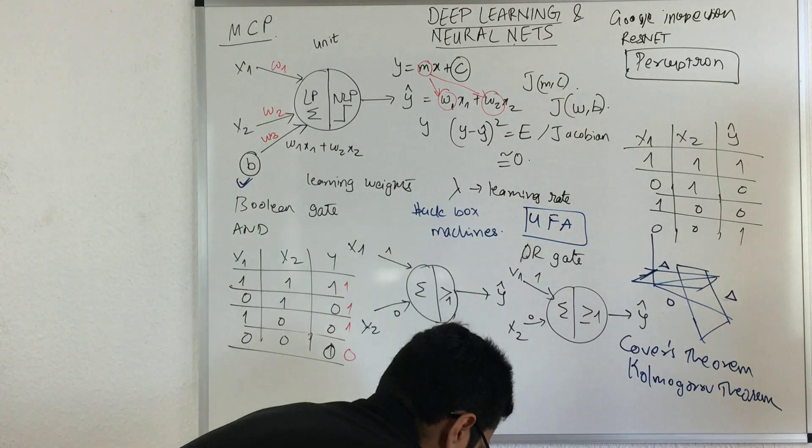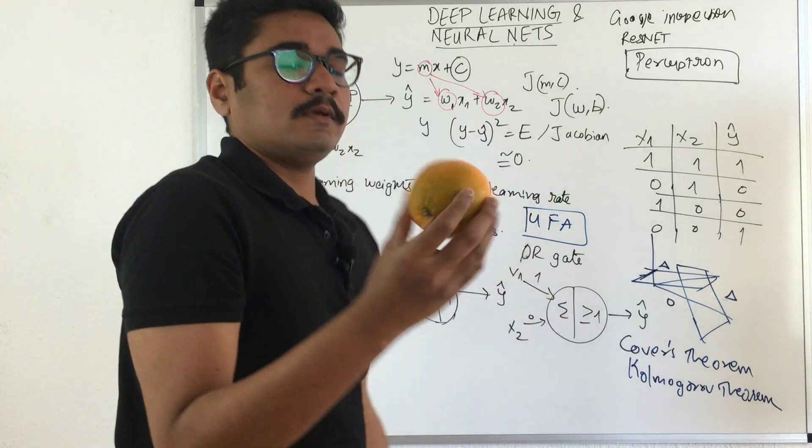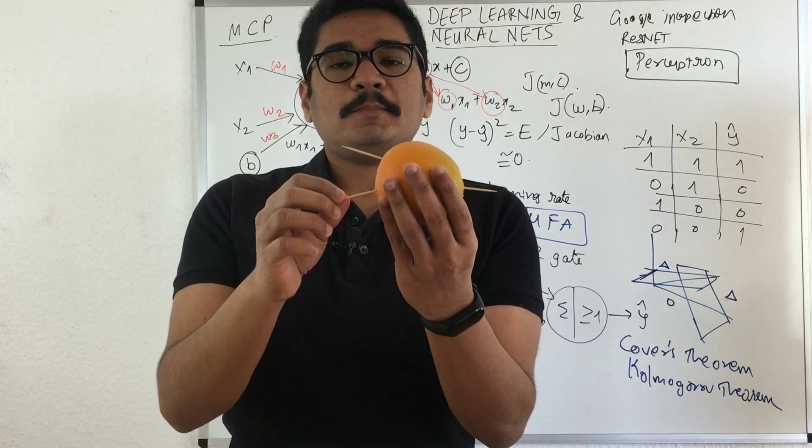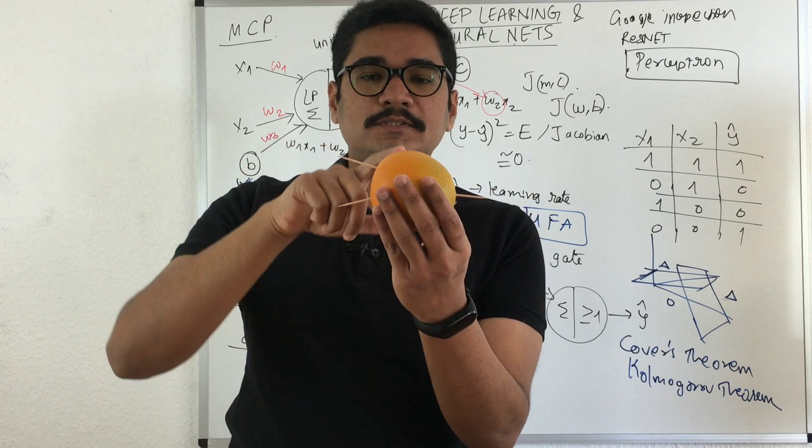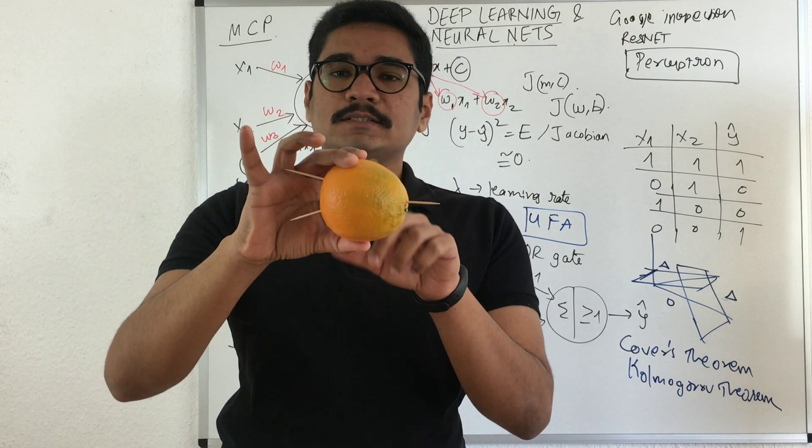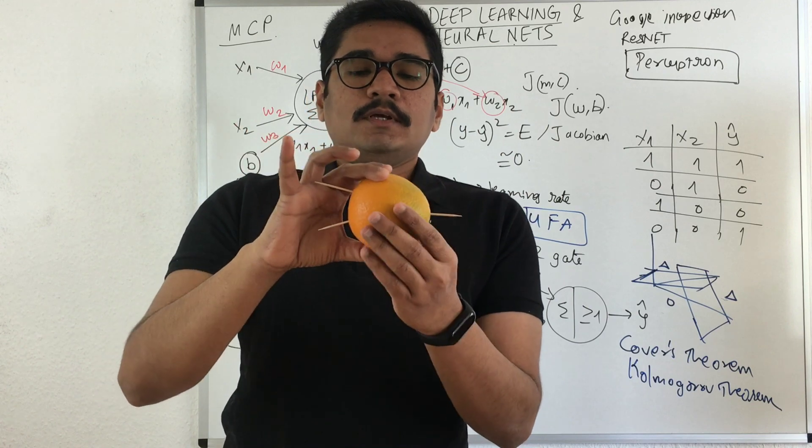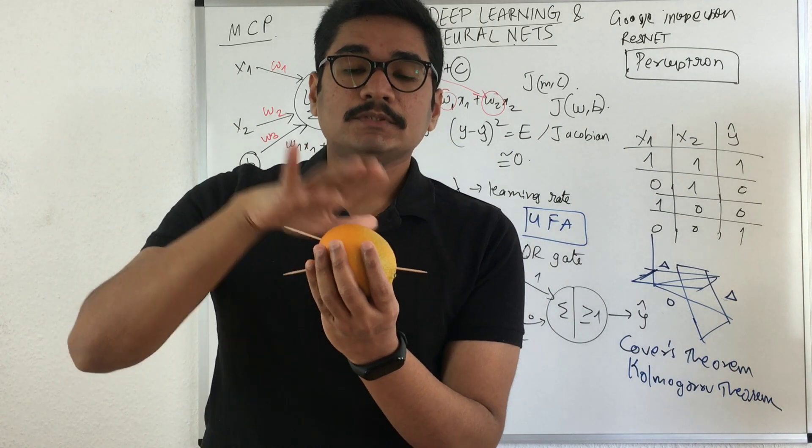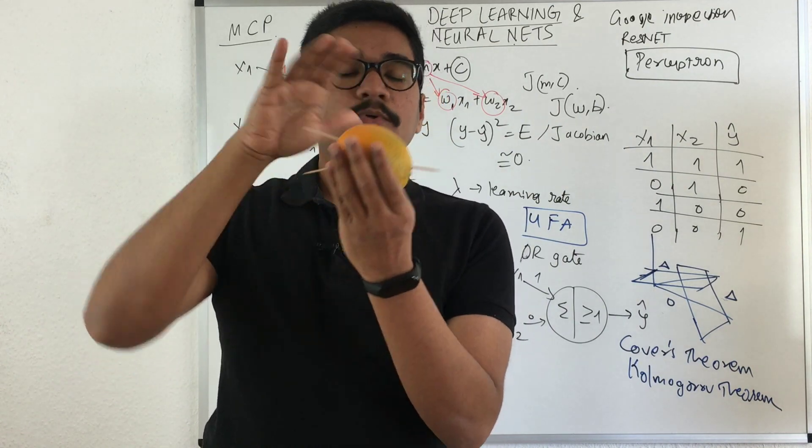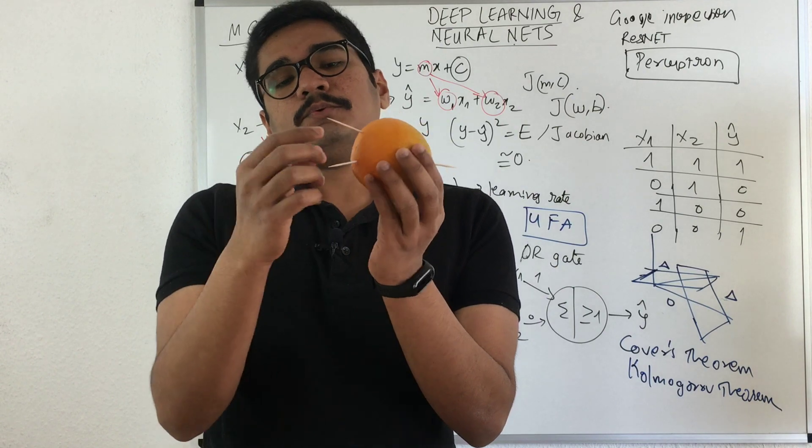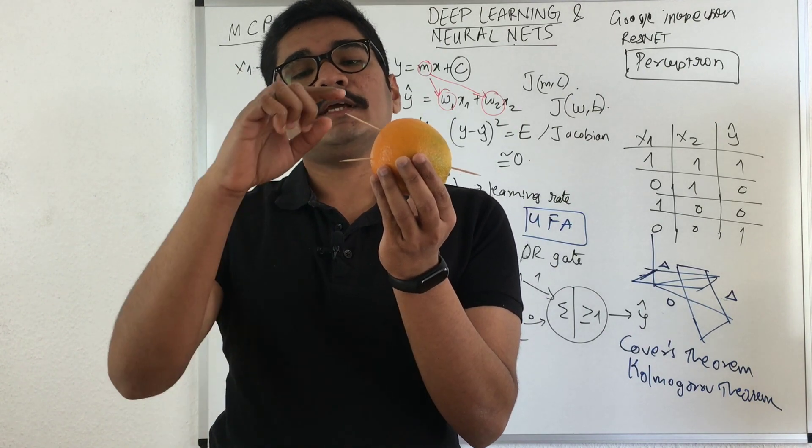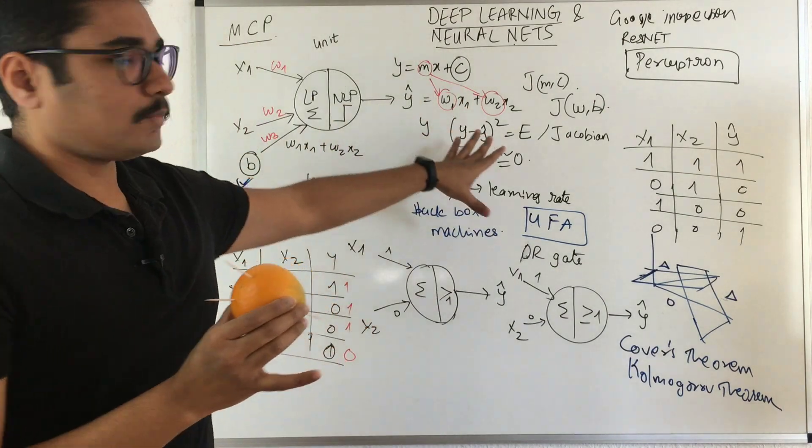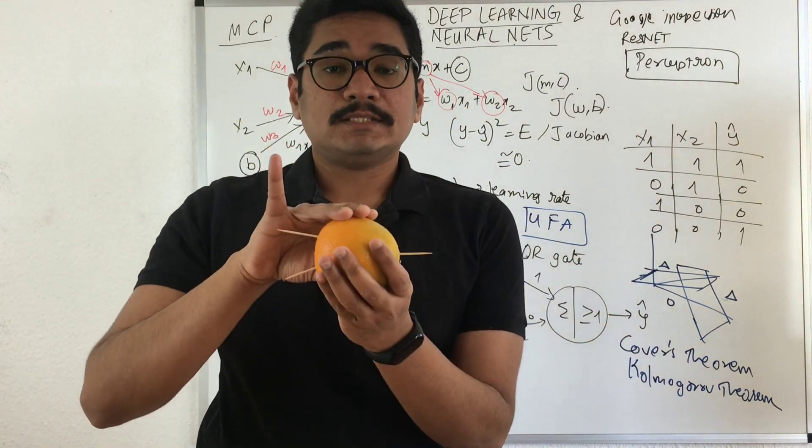That's why these neural networks are also called black box machines. Assume I have this setup. These two are inputs going to this neuron, a unit or neural unit, and this is the output. Whenever you pass this on, you don't know what's happening inside. It is a black box. You have these two inputs going into the system and you get some output in response, but you don't know what's happening inside.